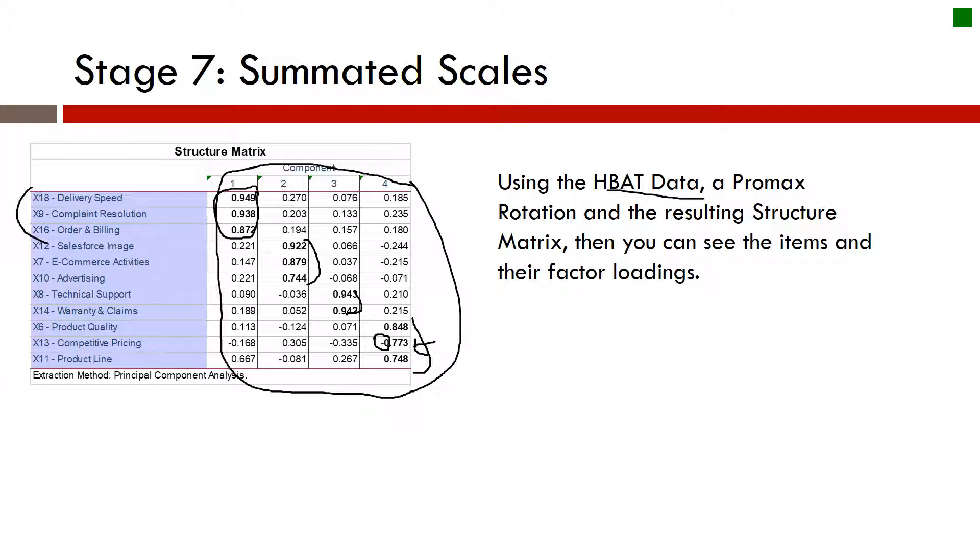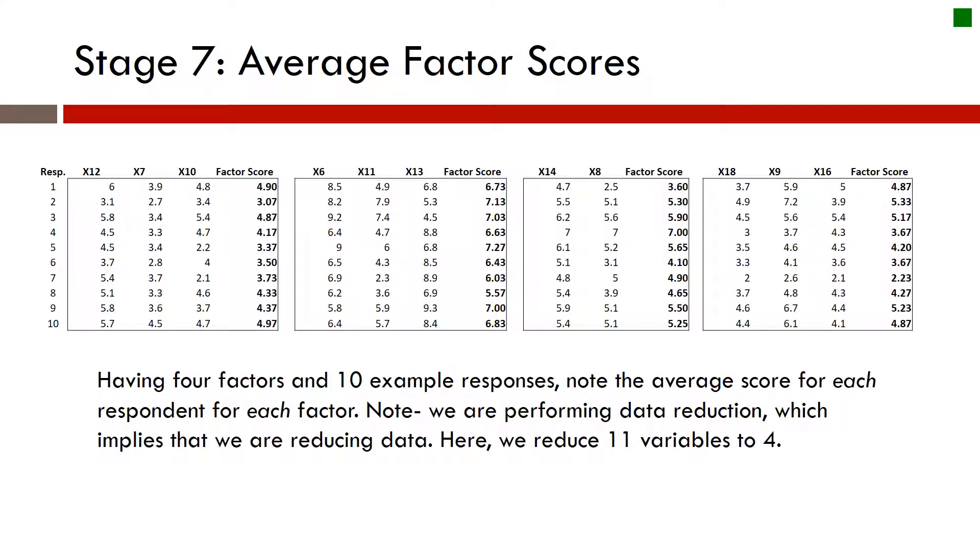It's not going to give you the correct factor loading here if we move forward with this. So what we're going to do is we will actually look at different respondents. So we have 10 different respondents here. This is just drawn from the data set. These are just 10 respondents. And this is the actual response here for each of these factor items for each of these variables. So X12, 7, and 10 responded. Number one scored a six, a 3.9 and a 4.8. And then for the next factor, we have the respondents' responses from the survey. And then we have the next factor and then the fourth factor. So we actually have four factors. We have I think 11 or so variables and we have 10 different respondents and this is their actual data.